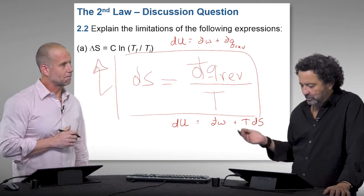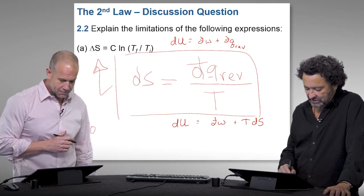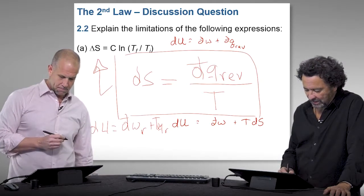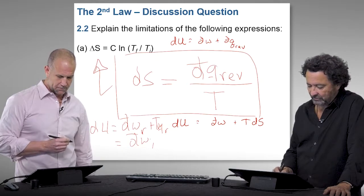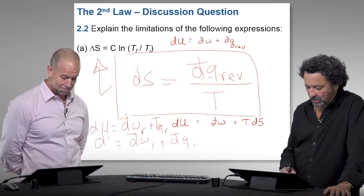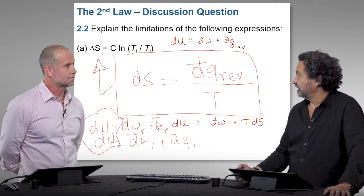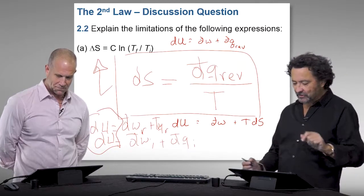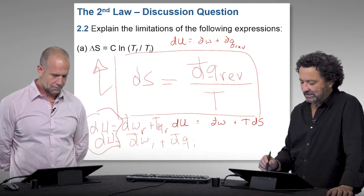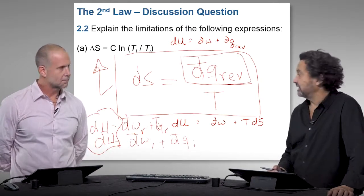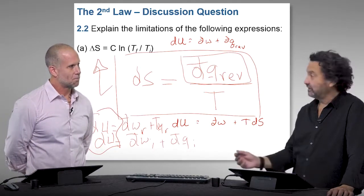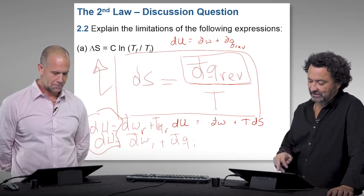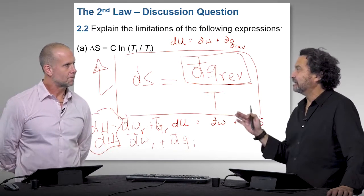It is remarkable that you can write for the change, the first law: dU = dW_reversible + dQ_reversible, and you can also write it as dW_irreversible + dQ_irreversible. Because this quantity here is going to be path independent. Whether you go reversibly or irreversibly, it doesn't make any difference.